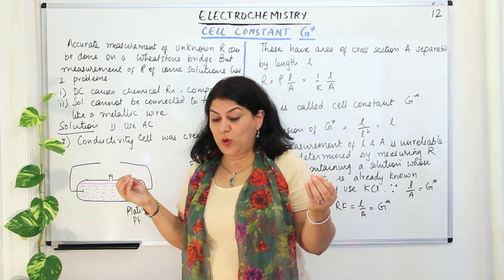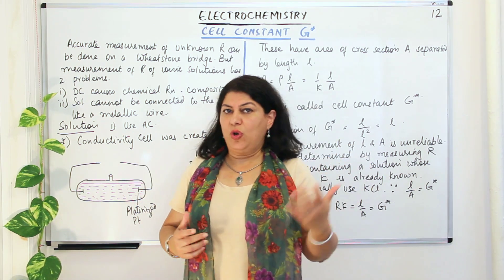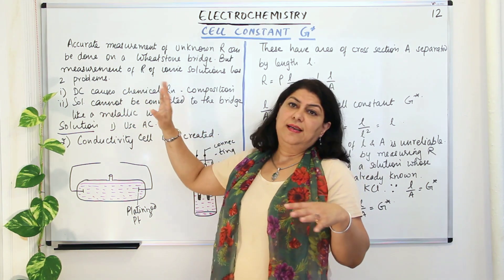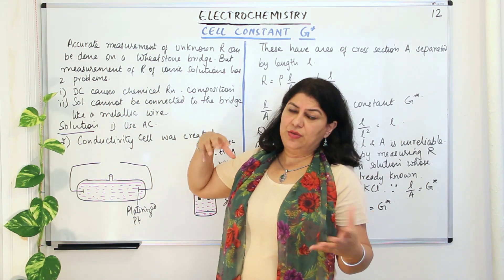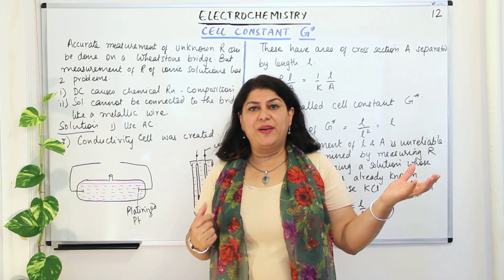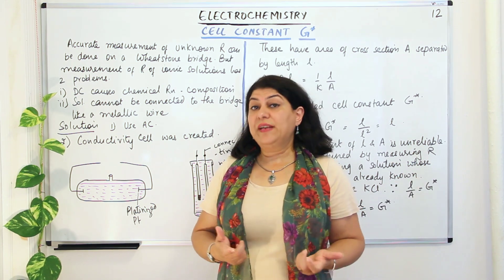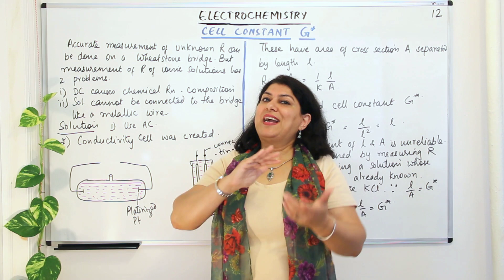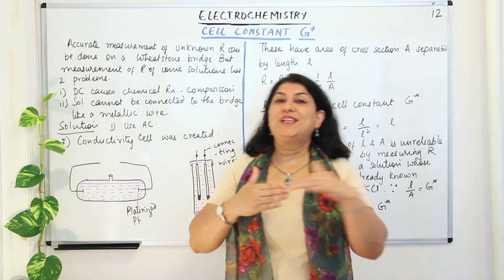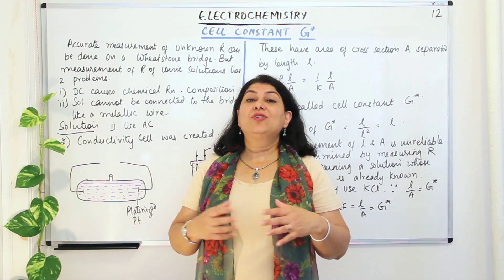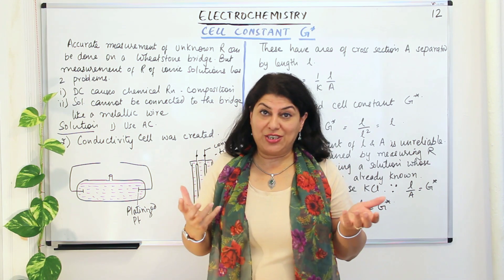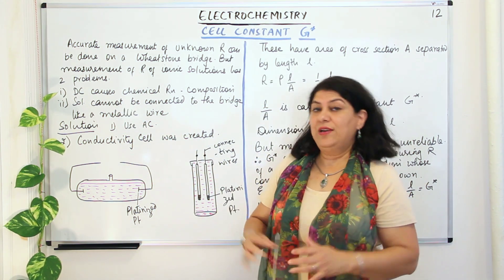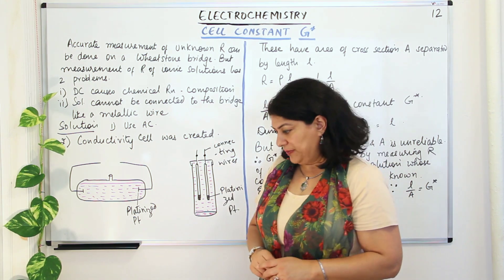Both problems were solved. The first one — using direct current which caused a permanent chemical reaction — was solved by using alternating current instead of DC. With AC, the reaction keeps fluctuating in the forward and backward direction and overall there is no net reaction. So we use AC instead of DC in the case of an ionic solution.